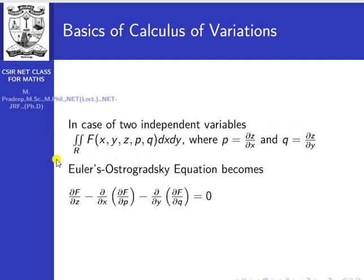In the case of two independent variables, we work with a double integral of F(x, y, z, p, q), where p = ∂z/∂x and q = ∂z/∂y. Here x and y are independent variables and z is the dependent variable. The Euler equation becomes: ∂f/∂z − ∂/∂x(∂f/∂p) − ∂/∂y(∂f/∂q) = 0.